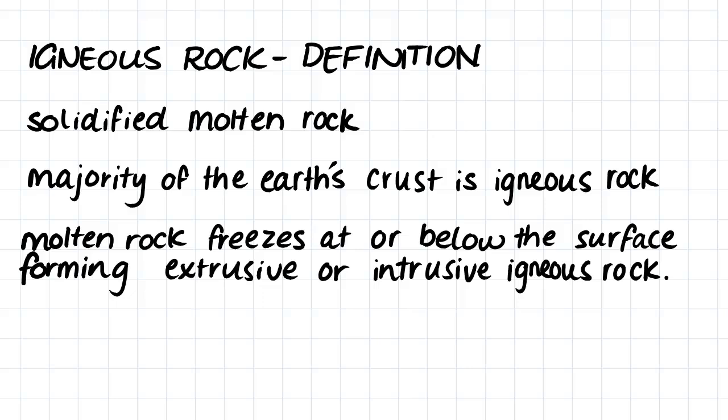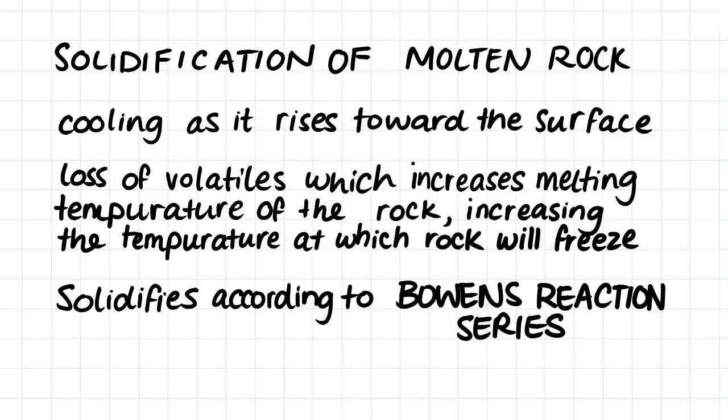But what makes the molten rock solidify? Molten rock will solidify when the temperature of the rock drops below its melting point. This can occur due to the simple cooling of the molten rock as it rises toward the surface, but it can also happen due to a loss of volatiles from the molten mix. When the volatiles are removed from the mix, the freezing temperature of the rock will rise, and therefore the rock can freeze at a higher temperature.